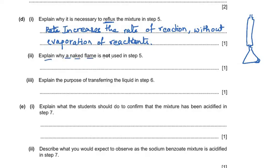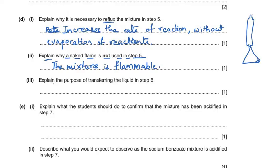The next part asks why a naked flame is not used in step 5. The reason is that the mixture and substances are flammable, so to avoid the danger of burning or fire, a naked flame cannot be used.